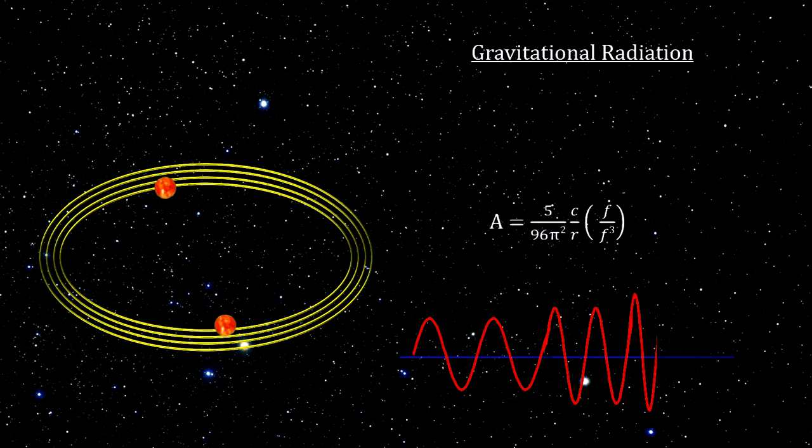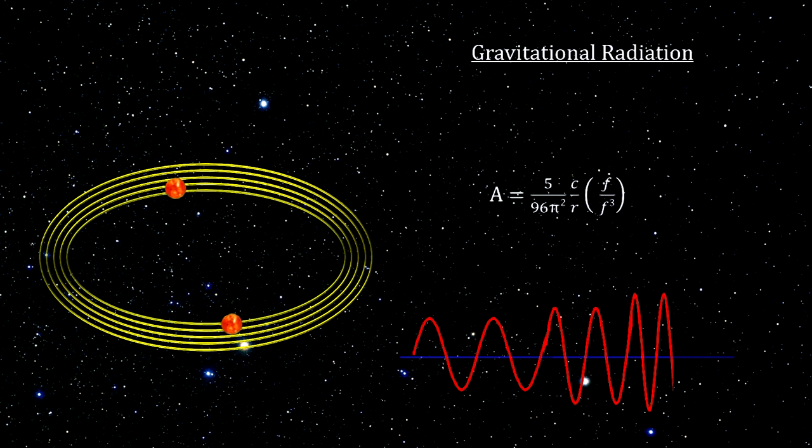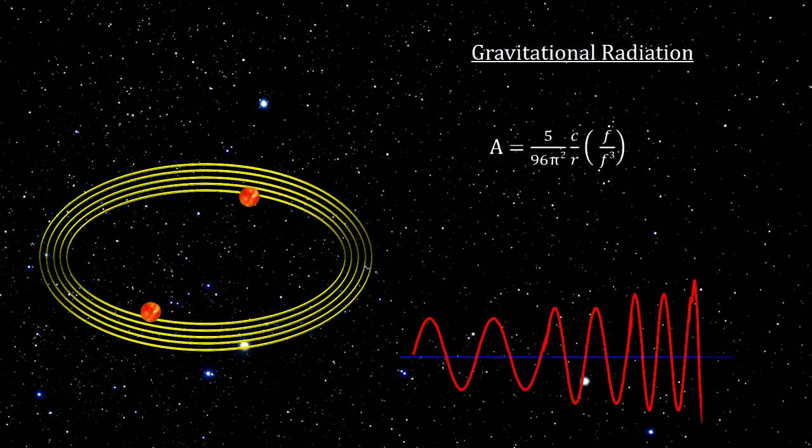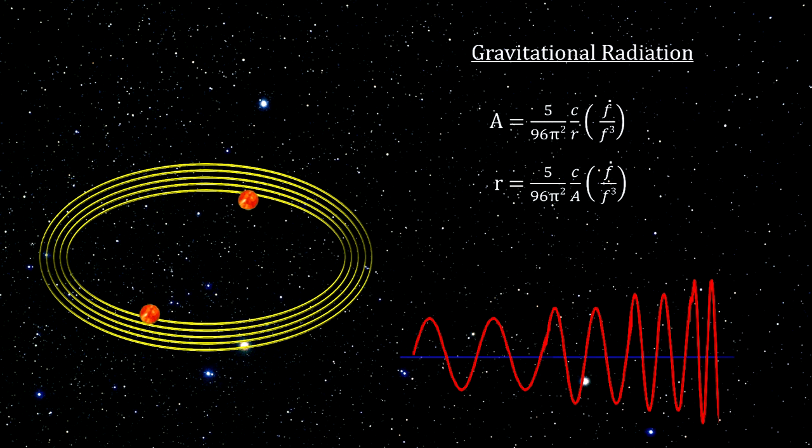This is crucial because, for most cases, we will have no way of knowing directly what the masses are or how far apart they are. But measuring the frequencies might be possible. If we can also measure the amplitude, we can even calculate the distance to the binary system.